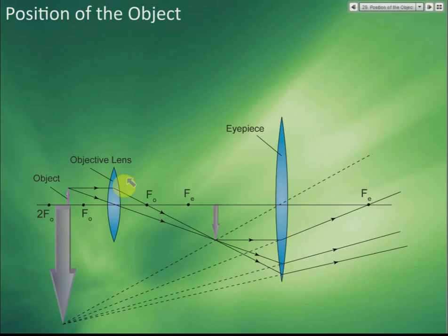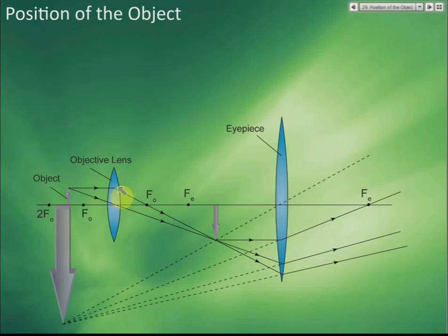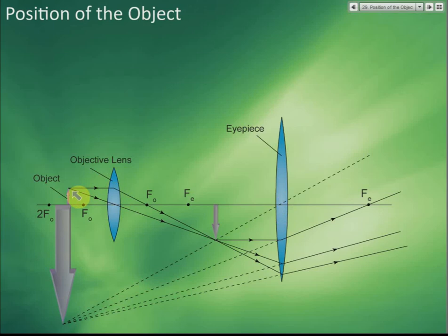For the compound microscope, there are two lenses. They may ask you which one has higher power. The objective lens has higher power compared to the eyepiece. For the astronomical telescope, the eyepiece has higher power and the objective lens has lower power — but for the compound microscope, it's the opposite: the objective lens has higher power and the eyepiece has lower power. The object is placed here and the image of the objective lens is formed here.